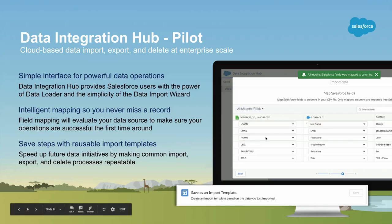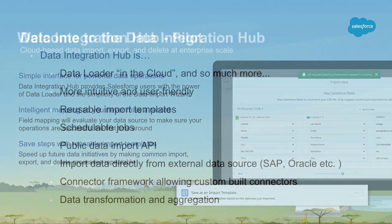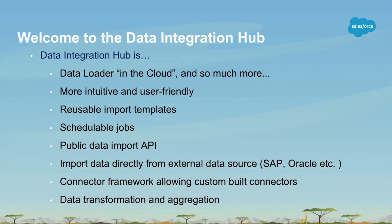We'd like to talk about the Data Integration Hub, which we've been working on to blend the best features of the two tools while adding a whole range of other features. Here's a quick screenshot — I'm going to give you a demo in a little bit. We want a simplified, cloud-based user interface that gives you intelligent mapping, the ability to save mapping templates and operations so you can automate future imports, as well as schedulability. We'll get into more detail in a second.